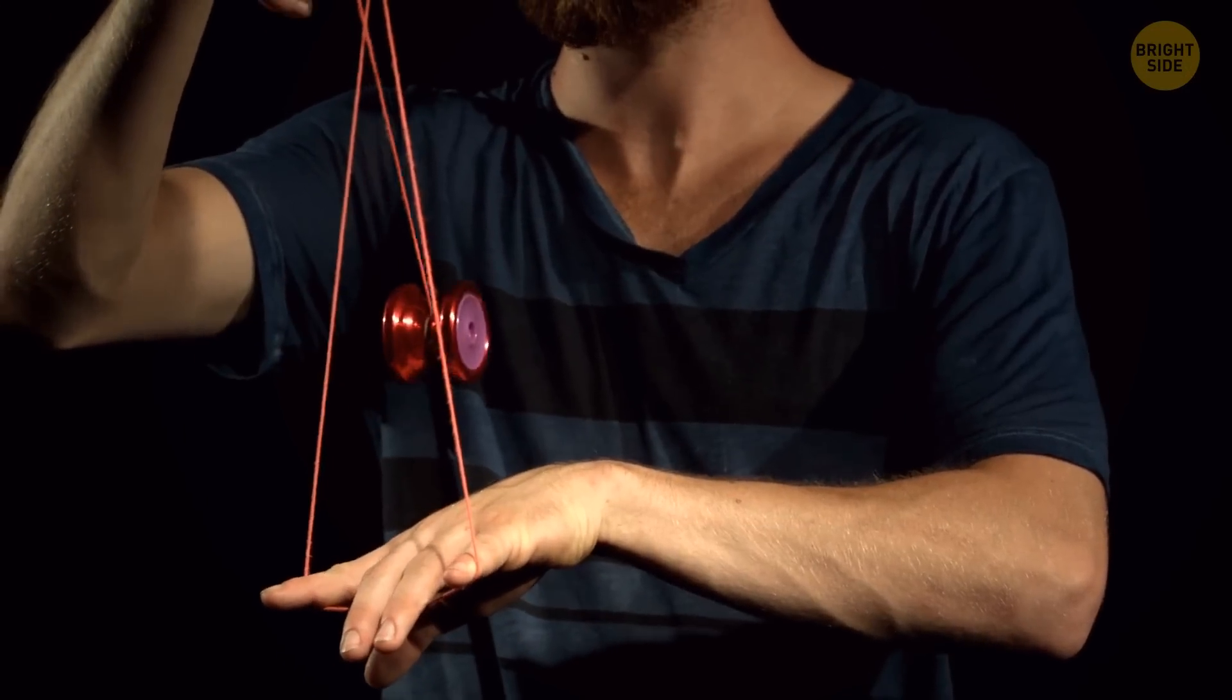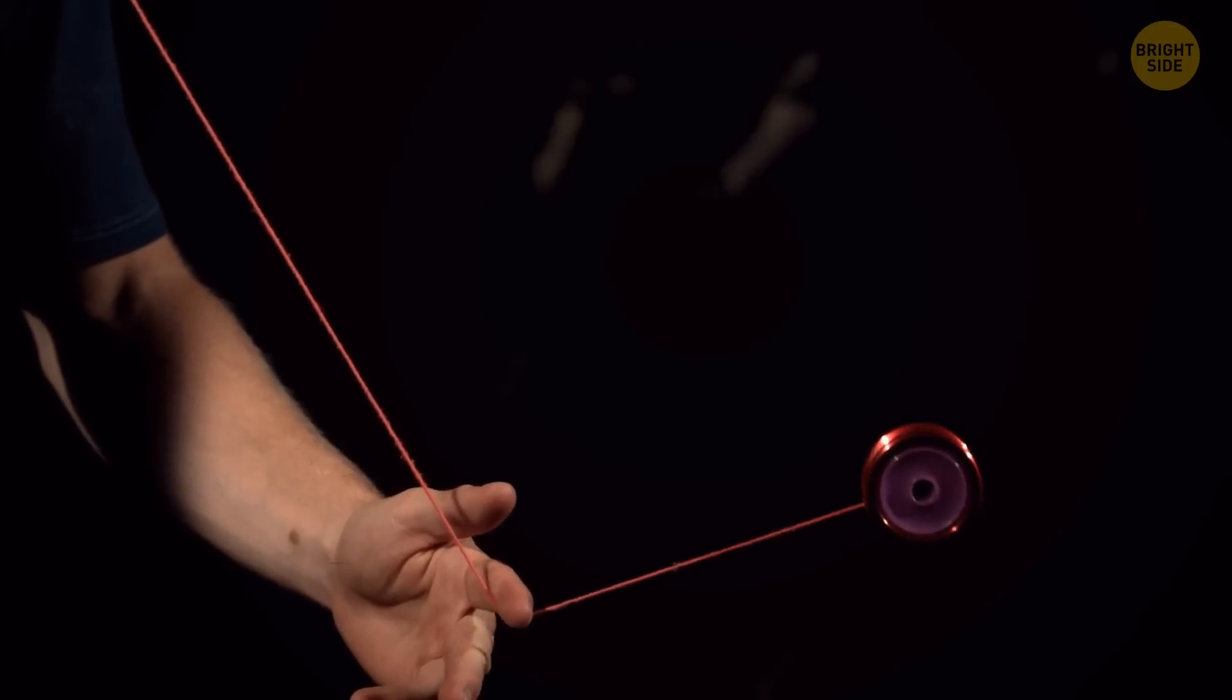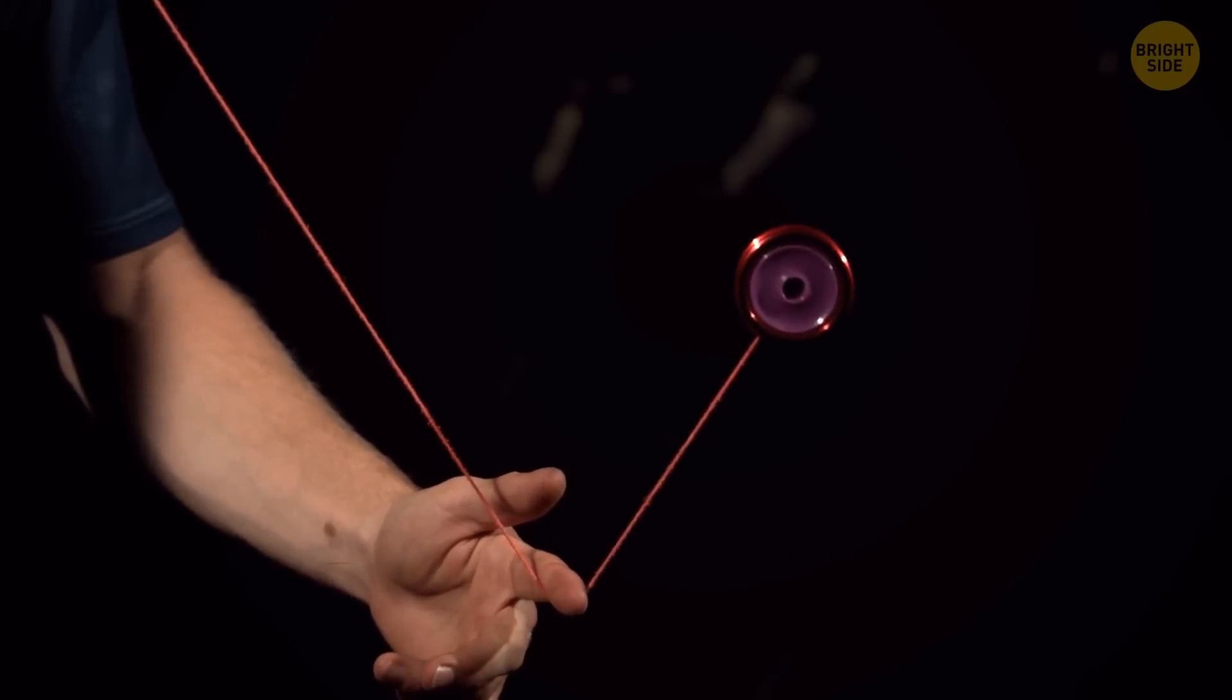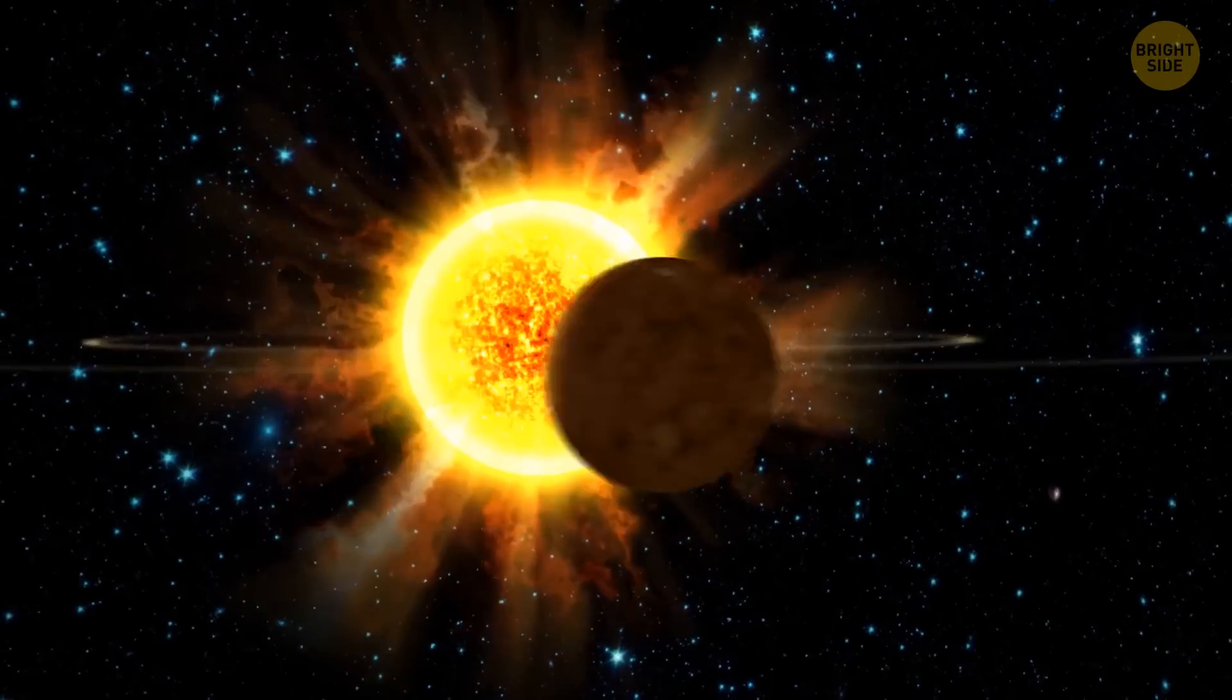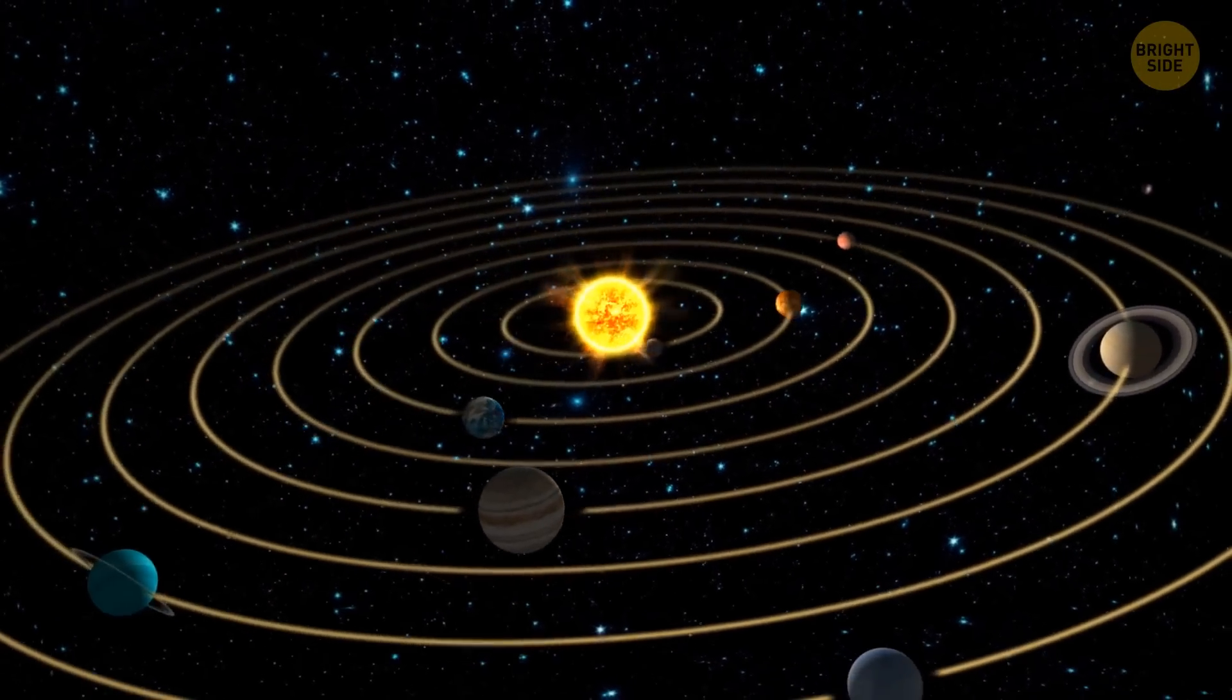It's like you're swinging a yo-yo around your hand on a string. The heavier the yo-yo, the longer it takes to finish each swing, right? Similar to that, the stronger the gravity of a massive object, the longer it takes for other objects to orbit it.